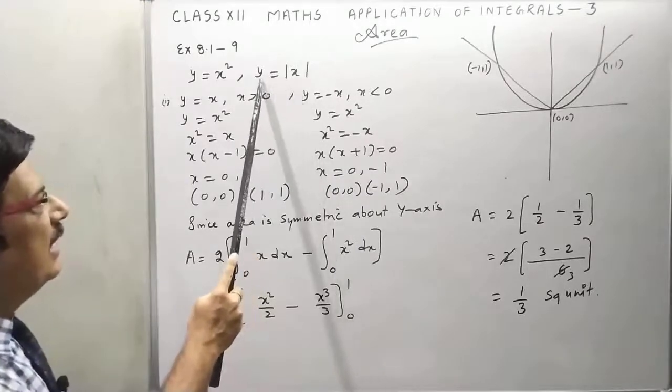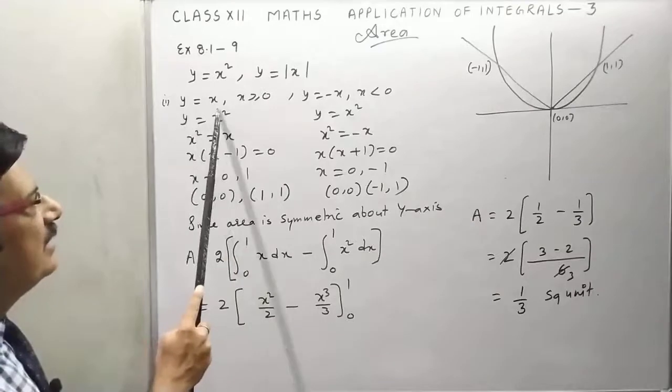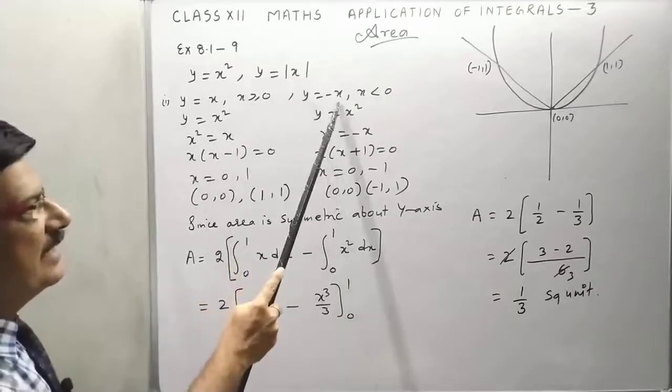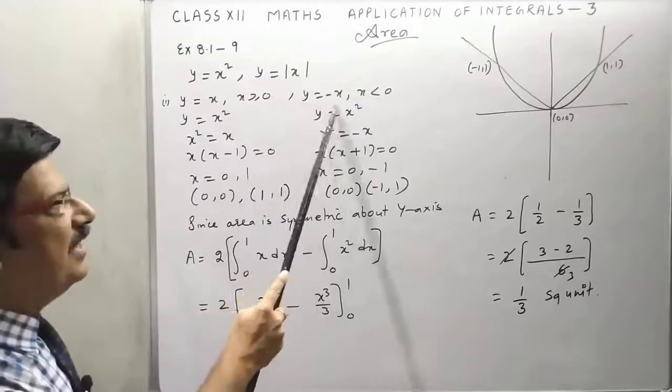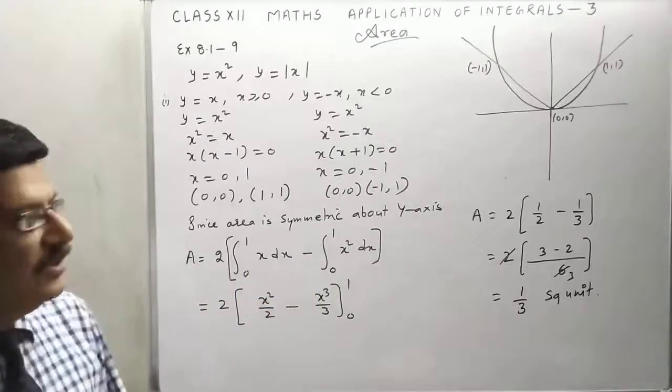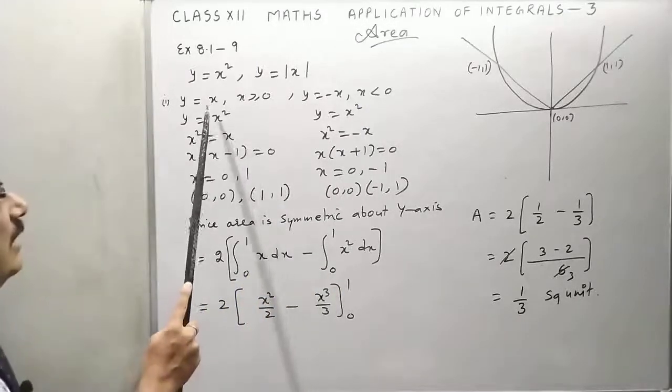As you know, y is equal to x and y is equal to minus x. This is valid when x is positive and this is valid when x is negative. Now we have to find the intersection of line and the curve.